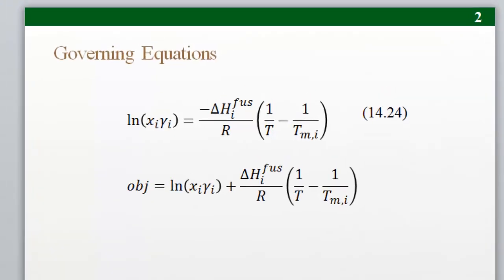The governing equation is equation 14.24, which relates the mole fraction and activity coefficient, or activity, to the heat of fusion and the melting temperature. The subscript i means that we relate these for the same component. The expression can be rearranged into an objective function that should go to zero, shown in the second equation. This is the form that I will implement in MATLAB.